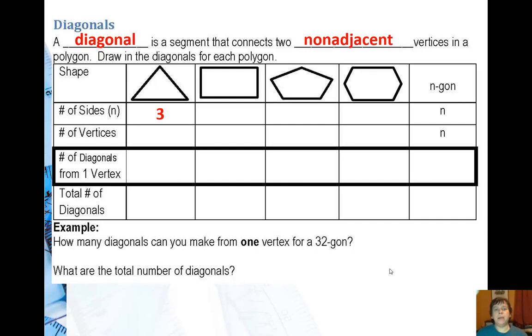The first one is a triangle which has three sides and three vertices. Well there are really no diagonals to draw because if I connect any two vertices I'm on the edge of the triangle, so I don't have any non-adjacent vertices. So the total number of diagonals for a triangle is zero.